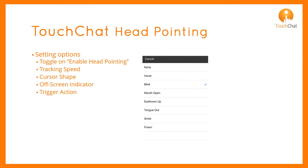We offer a number of options for the trigger action — that is, what method will you use to make the desired selection? If you select none, button activations will not take place. You can decide which trigger action is best: a hover, eye blink, open mouth, eyebrows up, tongue out, smile, or a frown.